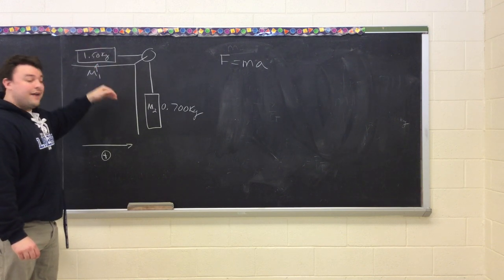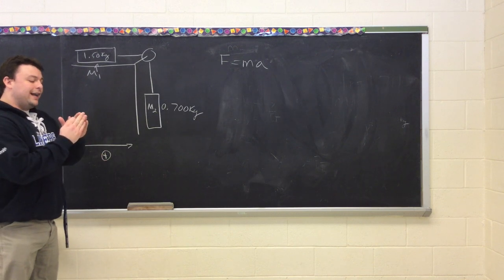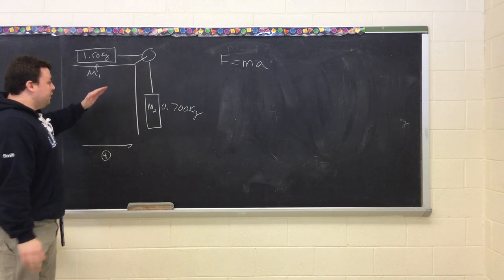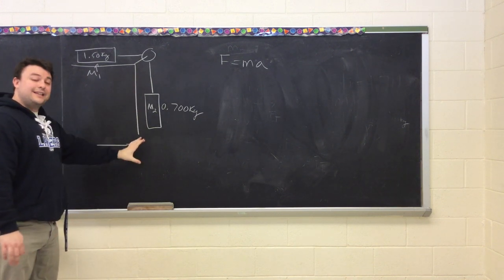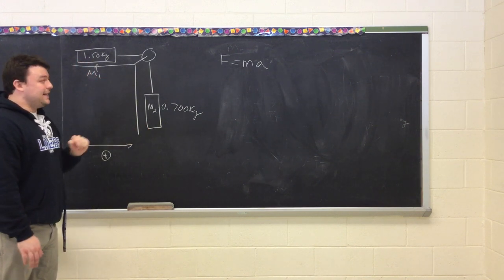Force normal is the same as force of gravity on this object, meaning it does not contribute. If you had an inclined plane where there was an object going like this and an object going like that, you would have to take into consideration Fg1 in this calculation.